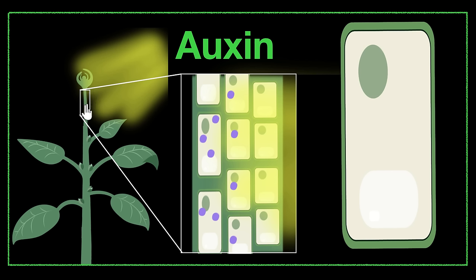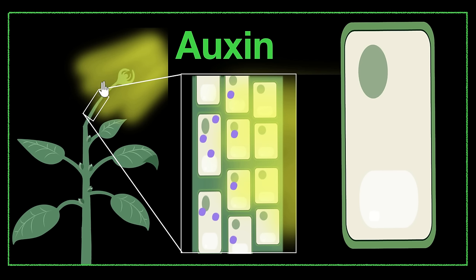Now just think about it. What happens if this side elongates more? You can see that the left side, the shady side, starts pushing more compared to the right side of the plant. And if you push more from here, automatically this will start bending towards the right. And that's how the shoot starts bending towards the light.